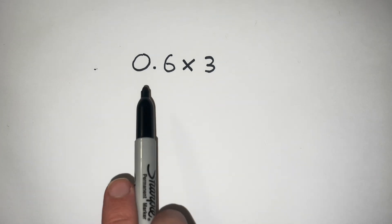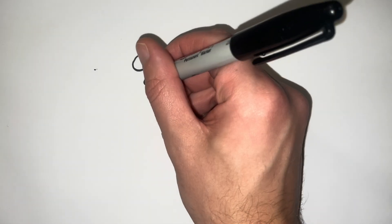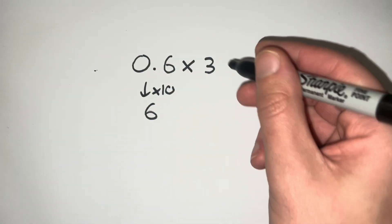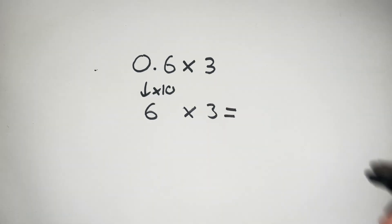So I'm going to turn 0.6 into a whole number by multiplying it by 10. If I multiply 0.6 by 10, that gives me 6. 6 multiplied by 3 is 18.